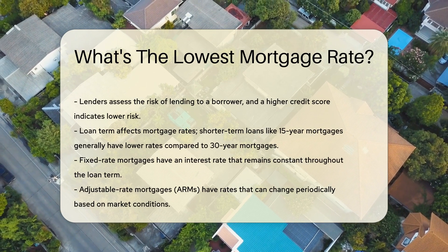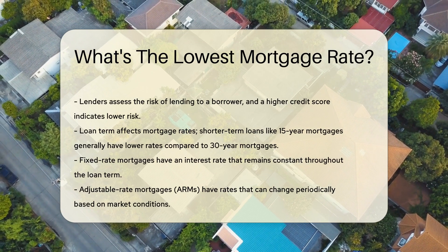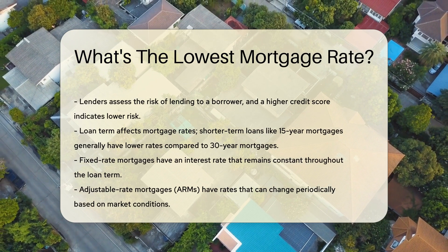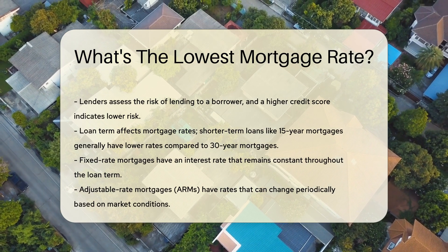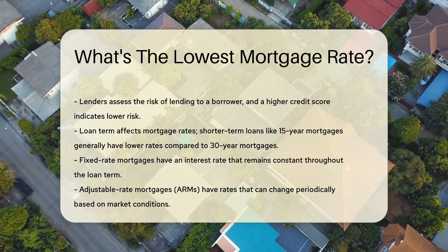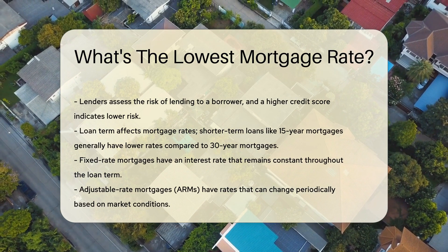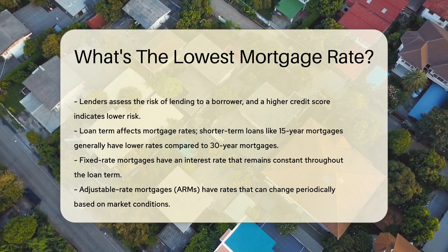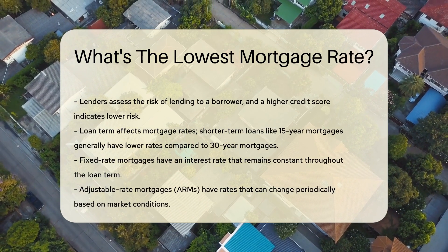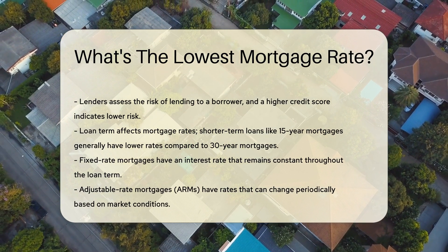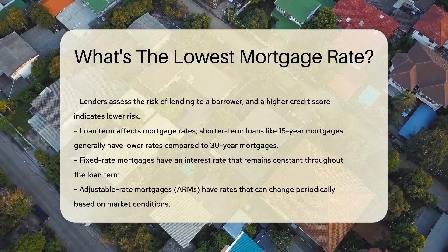Another factor that affects mortgage rates is the loan term. Generally, shorter-term loans, such as 15-year mortgages, have lower rates compared to 30-year mortgages. This is because lenders face less risk over a shorter period.